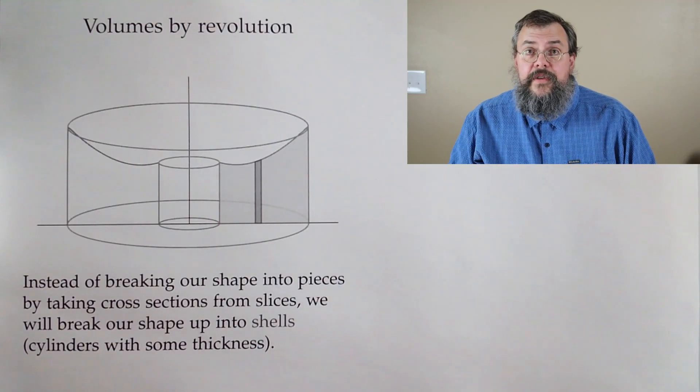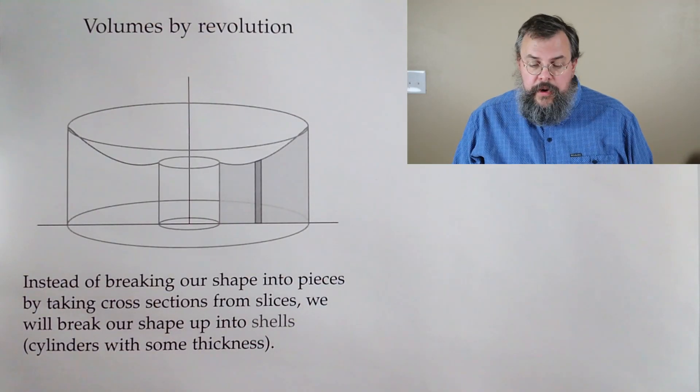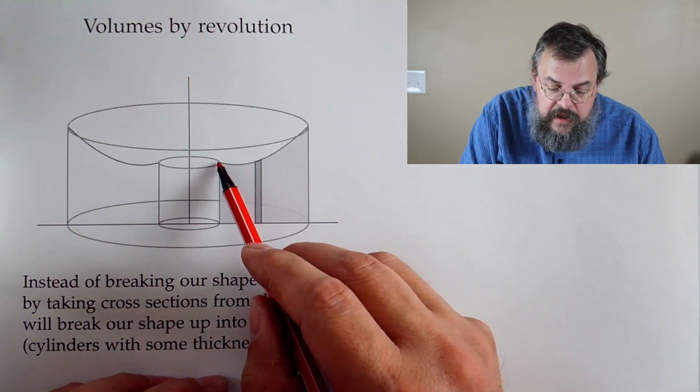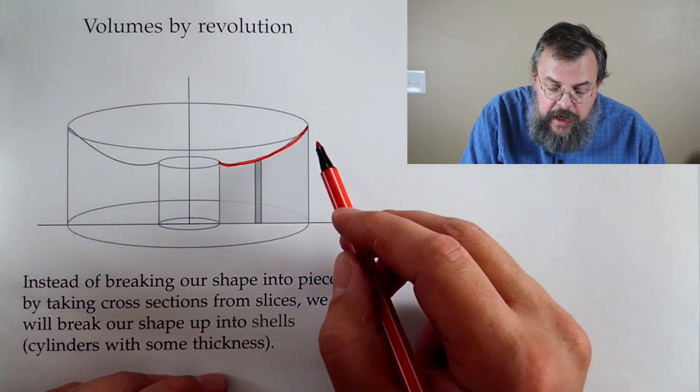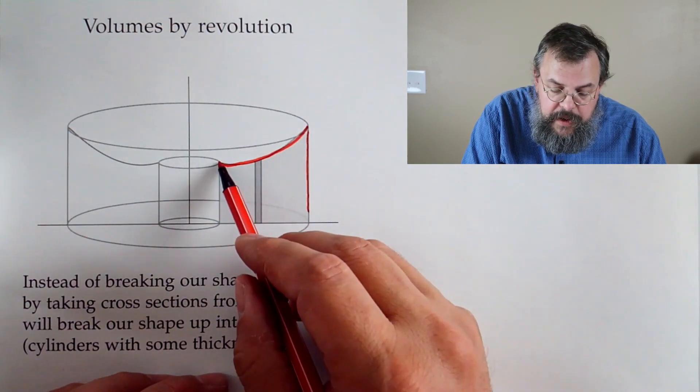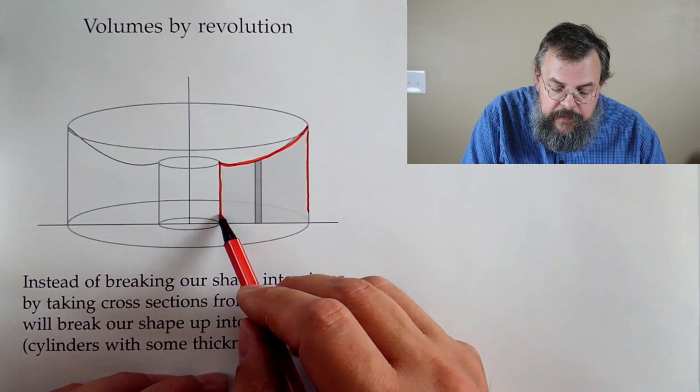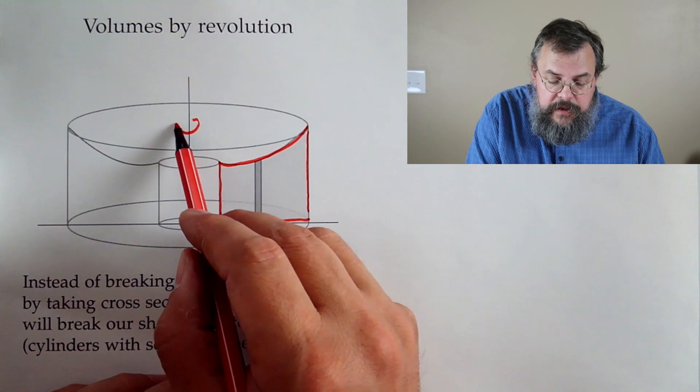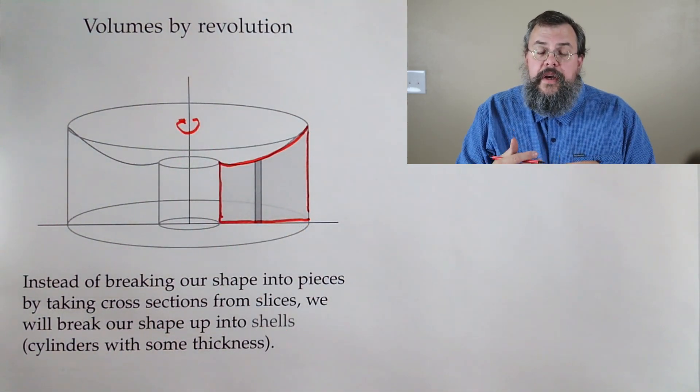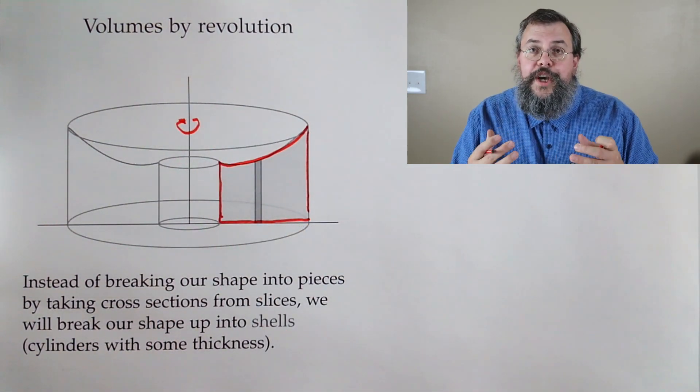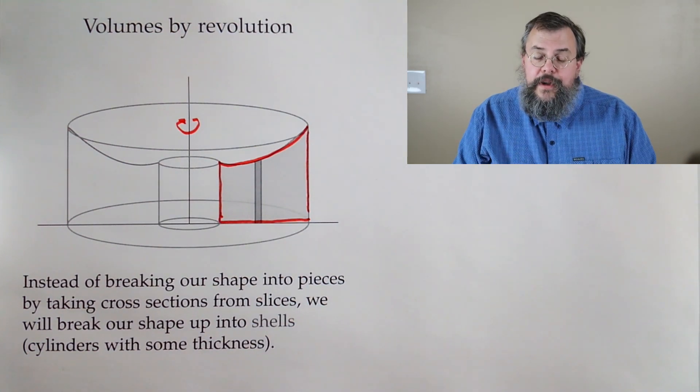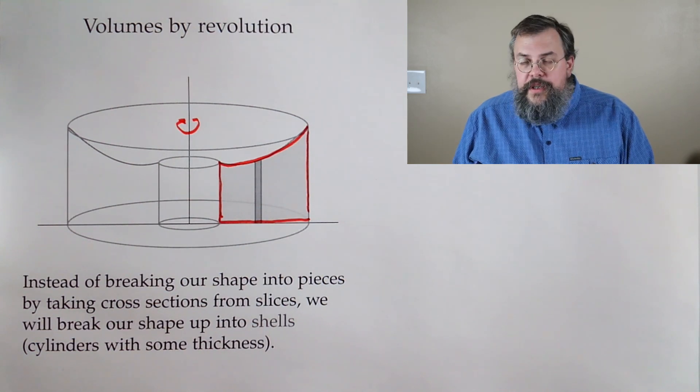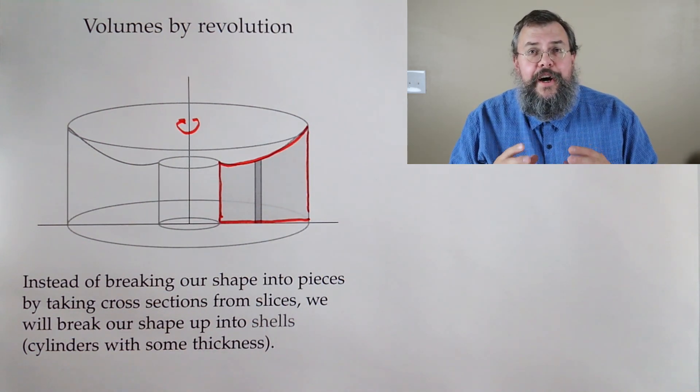So that's our goal for today is to say, hey, maybe we don't have to look at only cross sections. Maybe there's something else to be said for looking at a different way to break up our shape. So today's goal is we're going to talk about something called volume by using the shell method.